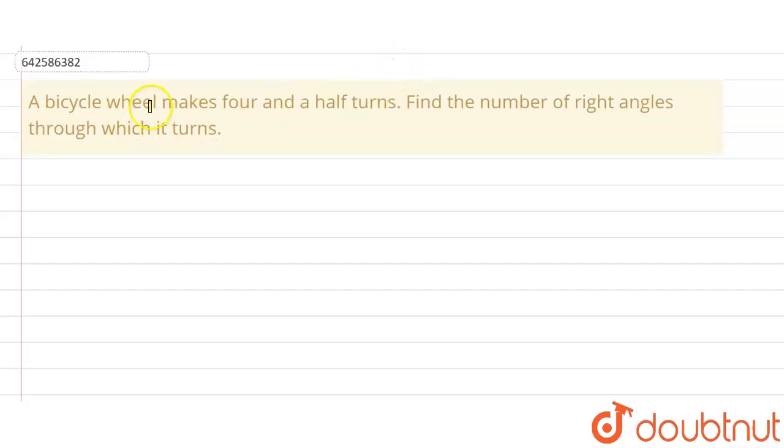Hello everyone, the question is: a bicycle wheel makes 4 and a half turns, find the number of right angles through which it turns.